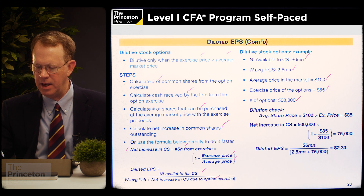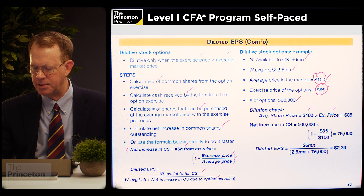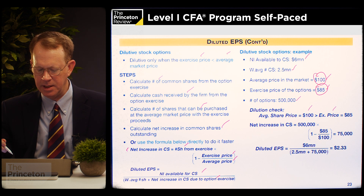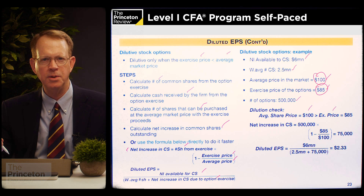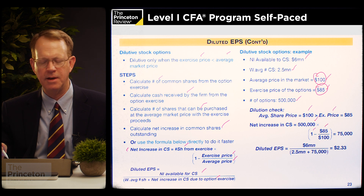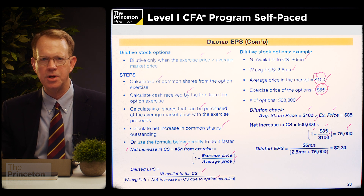For the dilution check, we compare the average market price with the exercise price of the options. Since the exercise price of $85 is less than the average share price of $100, the options are deemed to be dilutive. We take the 500,000 shares that would have been issued upon hypothetical exercise and adjust by the factor one minus the exercise price over the average market price, which works out to 75,000 additional shares.